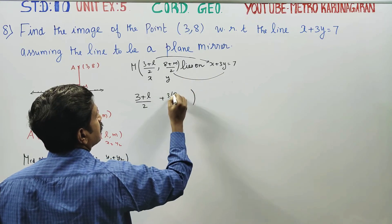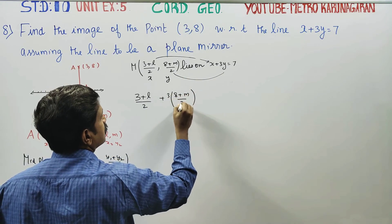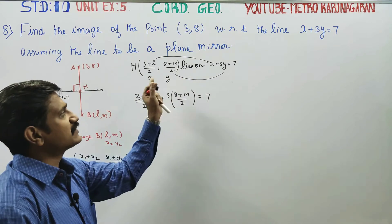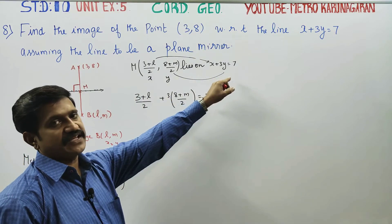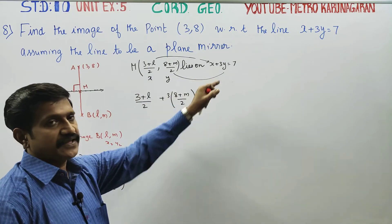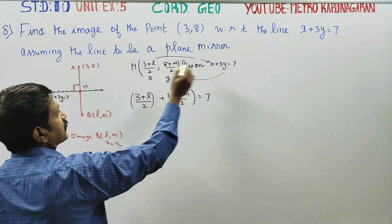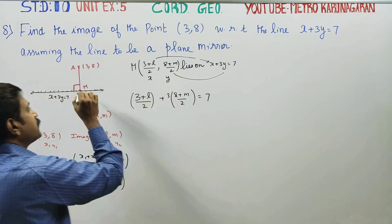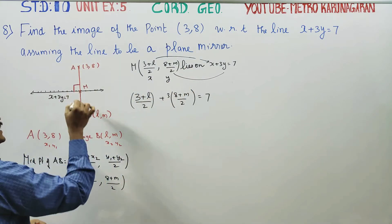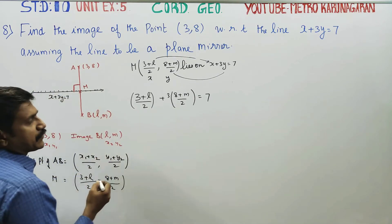If a point lies on a straight line, it will satisfy the equation. M is the midpoint of A and B, so it lies on this straight line. That is why we substitute it into the equation.